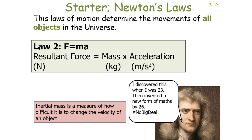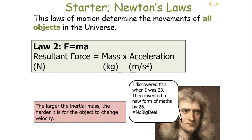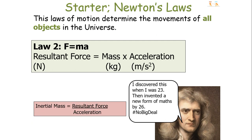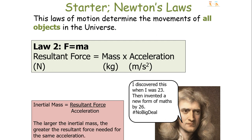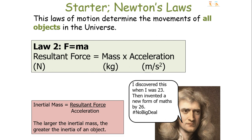Inertial mass is a measure of how difficult it is to change the velocity of an object — the larger the inertial mass, the harder it is for an object to change velocity or accelerate. We can rearrange the equation and make inertial mass the subject: inertial mass equals resultant force divided by acceleration, meaning inertial mass is defined as the ratio of resultant force over acceleration. So the larger the inertial mass, the greater the resultant force you would need for the same acceleration.